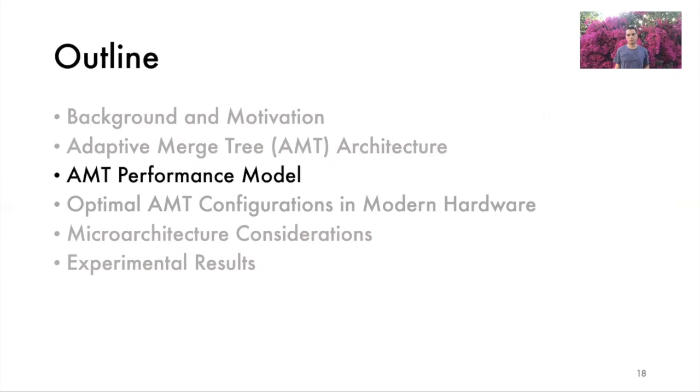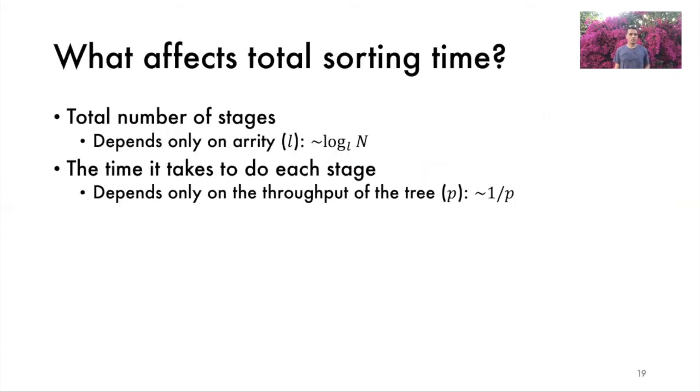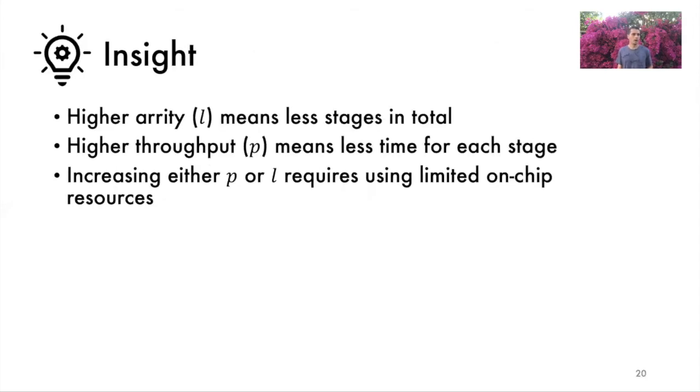Now let's look at the performance of a merge tree. Specifically, what affects total sorting time? Two things. First is the total number of merging stages required to sort. This depends solely on the Arity of the tree. In the previous example, we sorted 64 records in two stages using a tree of Arity equal to 8. Two stages were sufficient because 8 squared equals 64. In general, the total number of stages will be the logarithm base l of the number of records in the array n. The second factor that affects sorting time is how long a single merge stage takes. Assuming memory bandwidth is not the bottleneck, the time to perform a merge stage depends solely on the throughput of the tree P. So higher Arity L means we need less merge stages and higher throughput P means we need less time to finish each stage. Both of these are good.